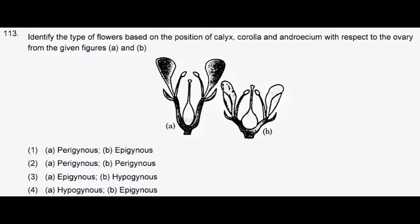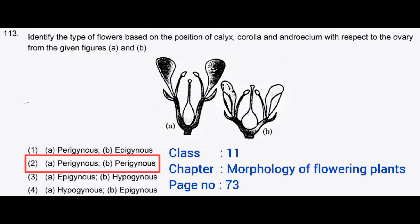Identify the type of flowers based on the position of calyx, corolla and androecium with respect to the ovary from the given figures A and B — correct answer: option 2, A perigynous, B perigynous.